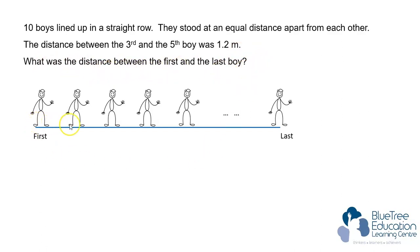If this is the first boy, second, third, fourth and fifth, the distance between the third and the fifth boy is 1.2 meters. As you can see, there are only two spaces between them.